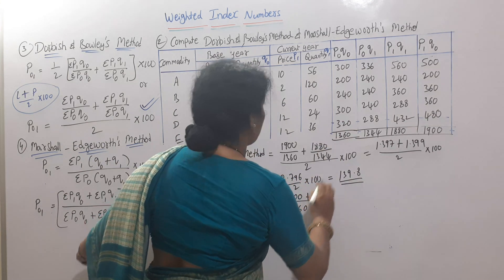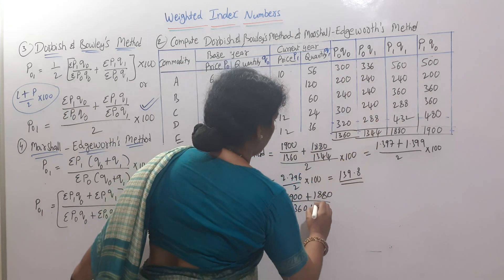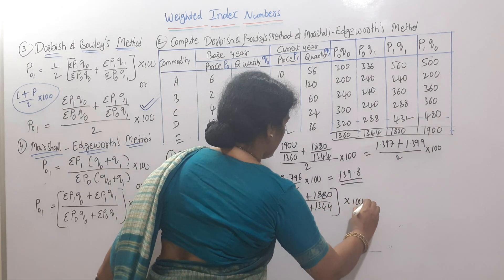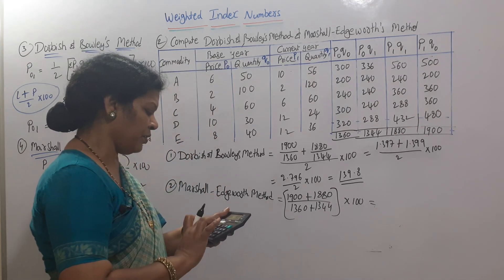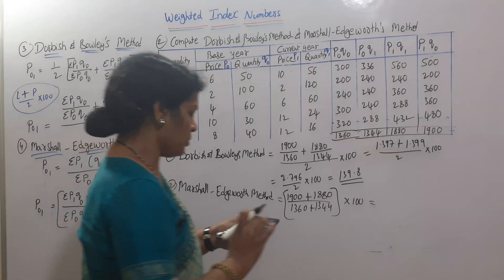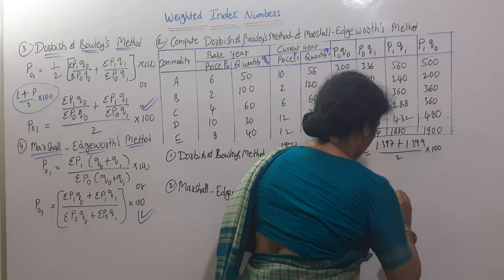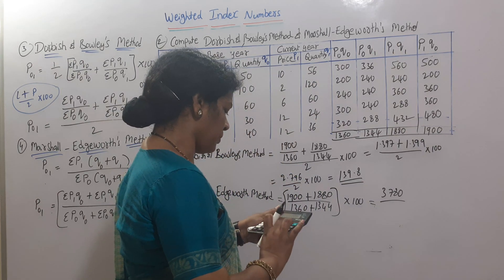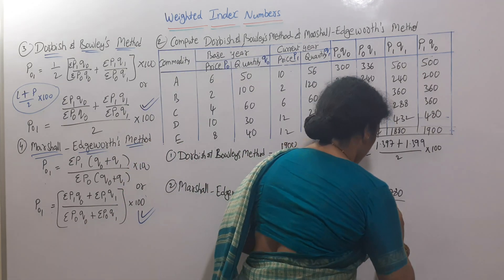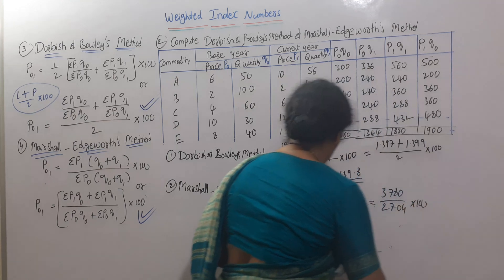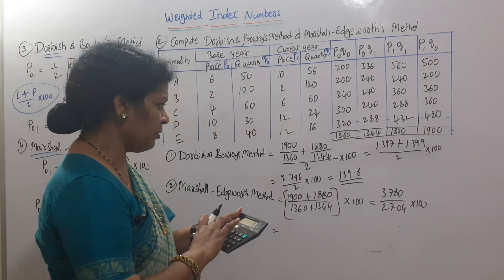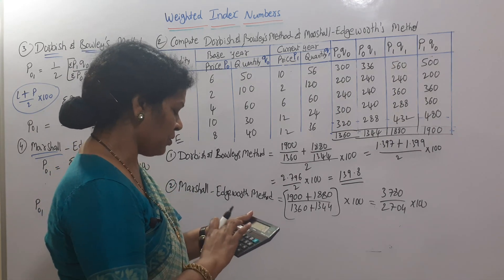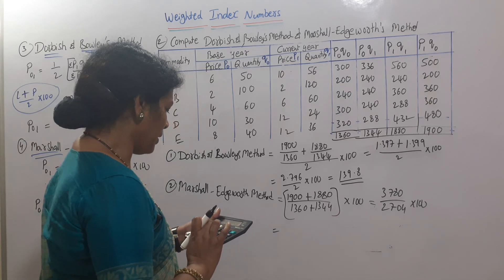Shall we do the calculation? 1900 plus 1880 comes to 3780 divided by 1360 plus 1344, which is 2704, times 100, which comes to 139.79.